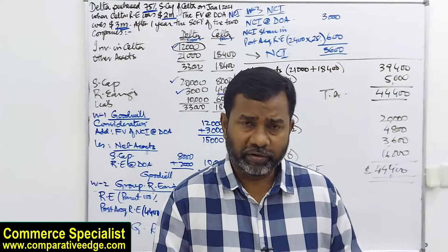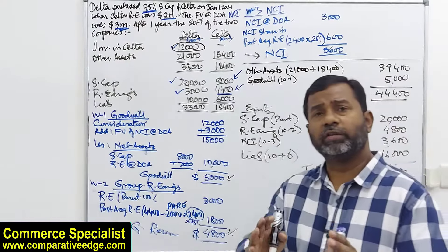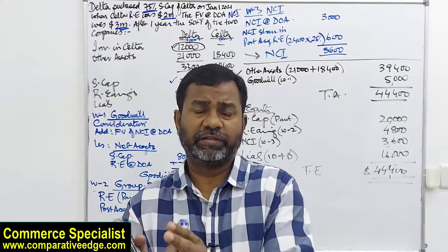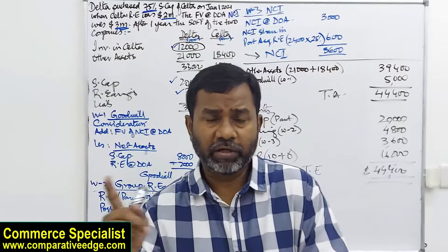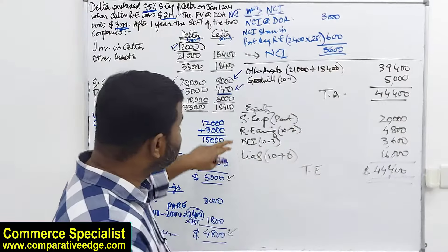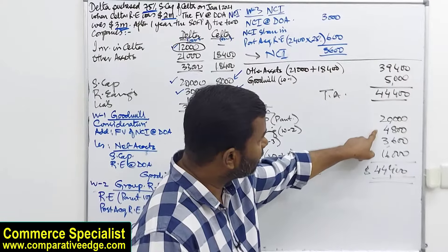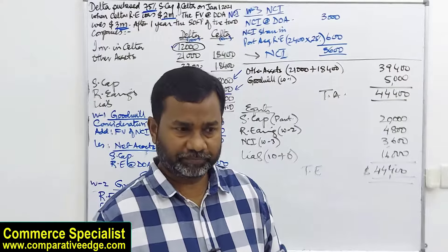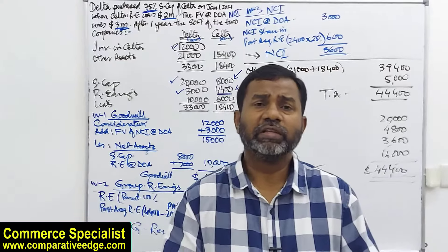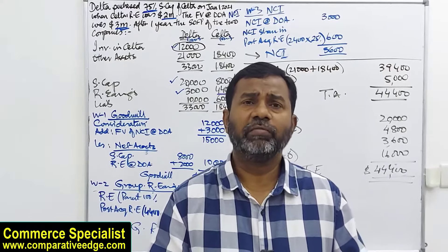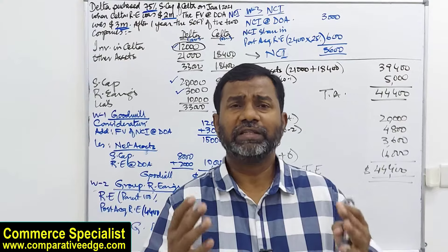The assets and liabilities show what the group controls — not the parent or subsidiary individually, but the group. The equity section shows how much belongs to the group and how much belongs to the non-controlling interest. Now we move to the third and last scenario, which introduces the possibility that parent and subsidiary may trade with each other, creating intra-group balances and an element of unrealized profit.